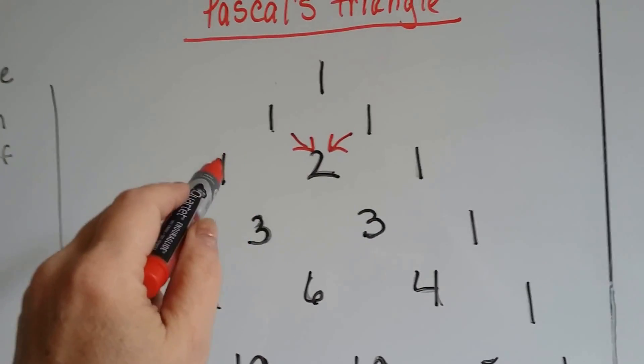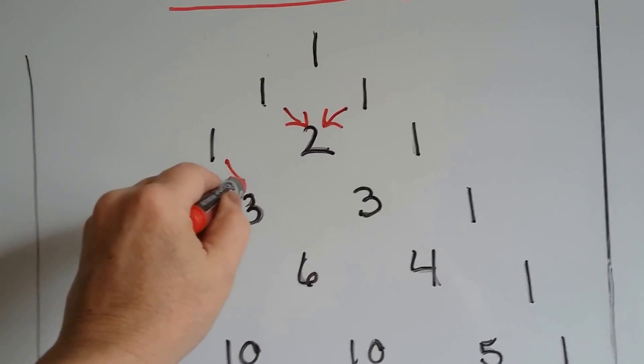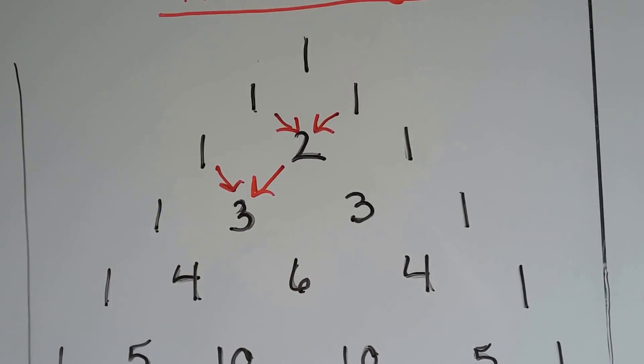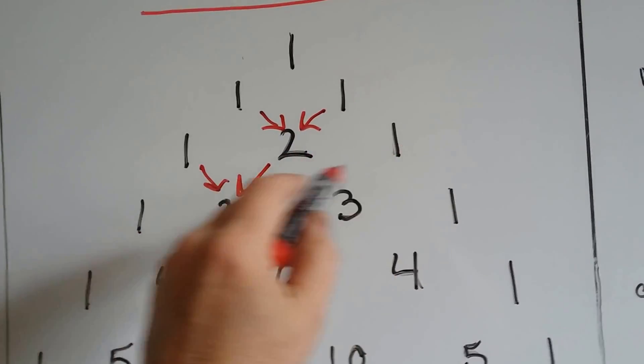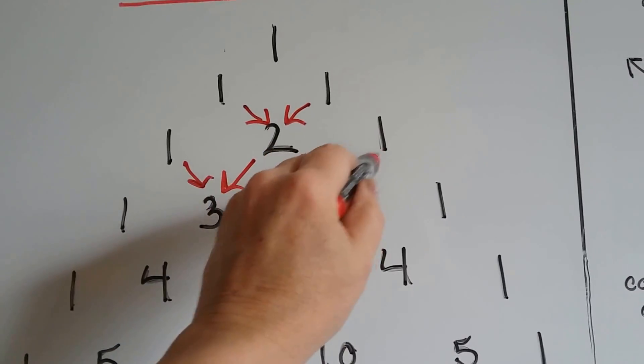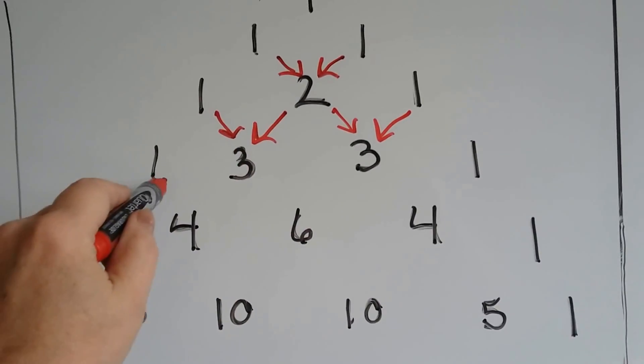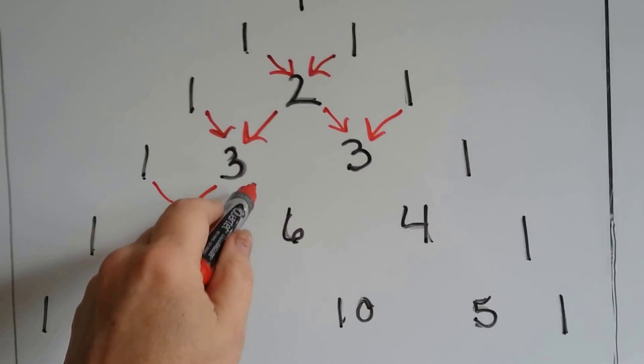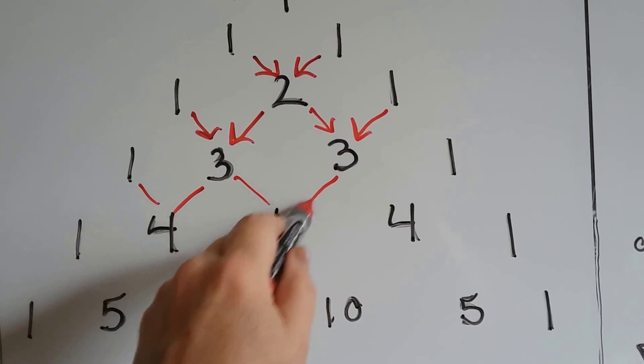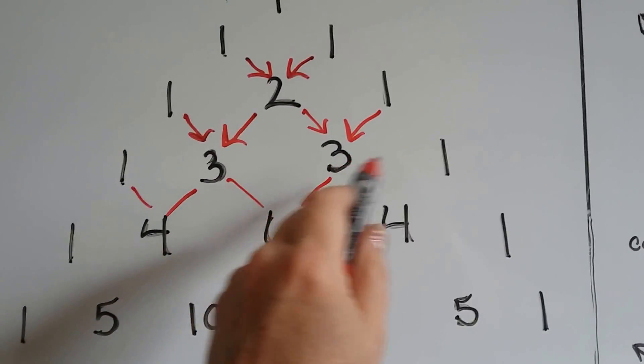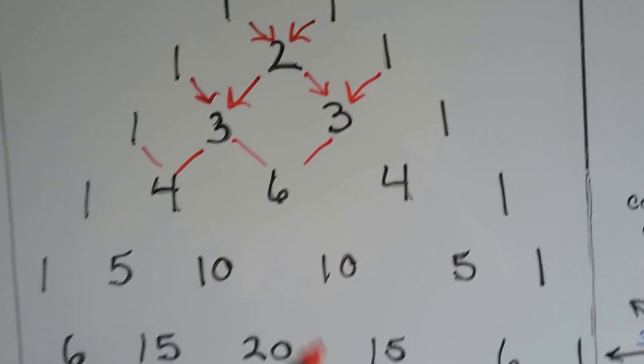And you say, what is this one plus this two? And it equals three, see? And then this two plus this one equals that three. See how it's coming down? This one and this three equal four. This three and this three equal six. This three and this one equals that four. Look it.